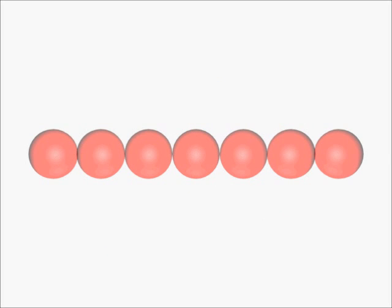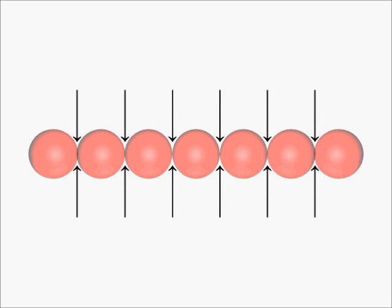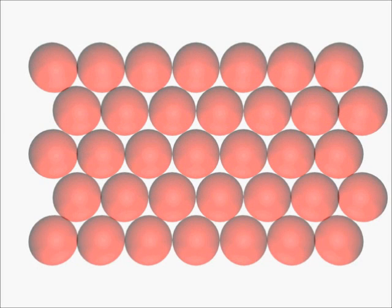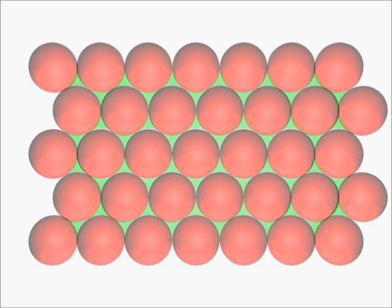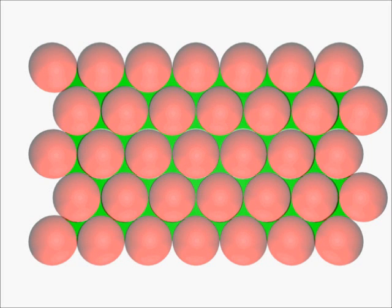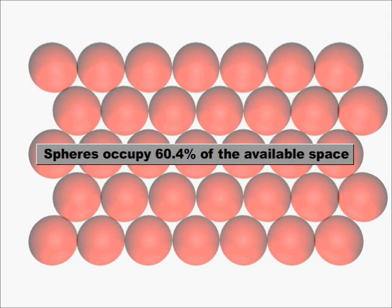A second way of arranging the linear one-dimensional arrangements is to keep the spheres of the second linear one-dimensional arrangement in the depressions of the first, like this. Here every alternate linear arrangement has the same alignment. These are the vacant spaces which is visibly less than the square close packing and hence more efficiently packed. In this packing the spheres occupy 60.4% of the available space.